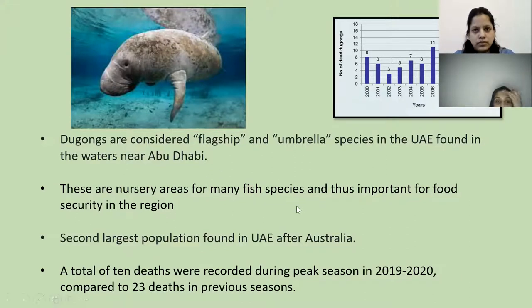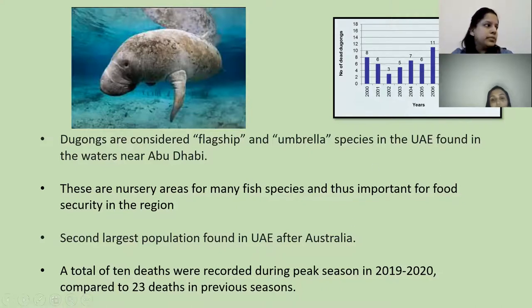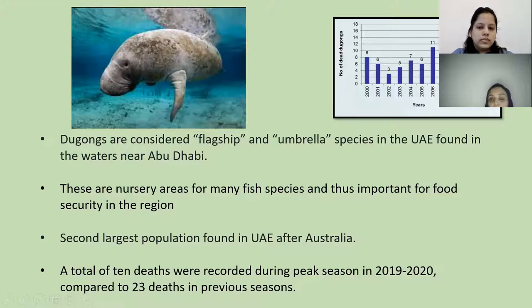Dugongs are important for other fish species to thrive. They form the second largest population in UAE after Australia. The teacher points to a graph on the slide showing dugong deaths by year. In 2011 there were quite a number of deaths, and the most recent data shows only 10 deaths recorded during the peak season of 2019–20, compared to 23 deaths in previous seasons.